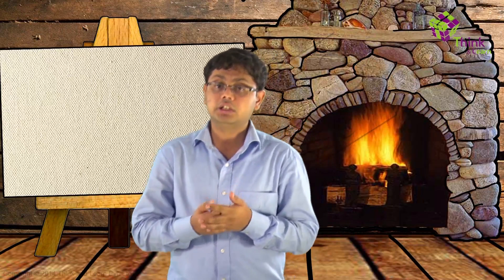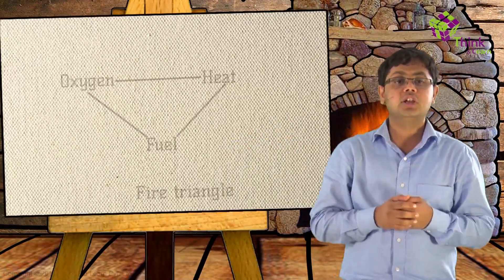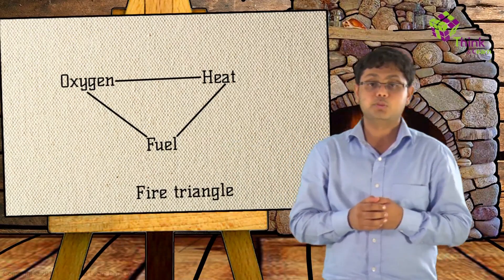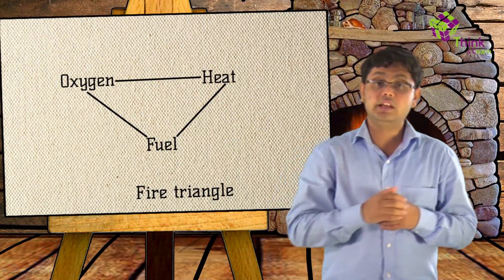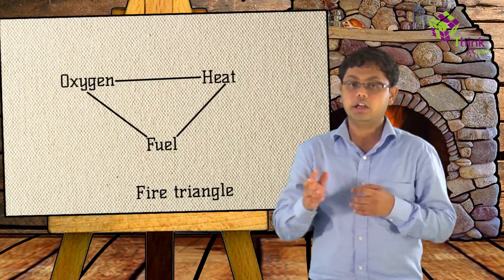If we need to extinguish a fire, just like what the fire extinguishers do, then we will have to remove at least one of these three components of the fire triangle that we just spoke about. And once you remove one of these three components, then the fire will definitely die out.